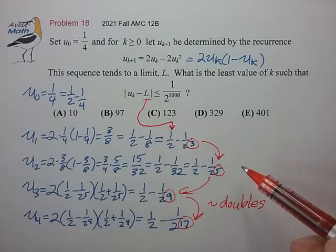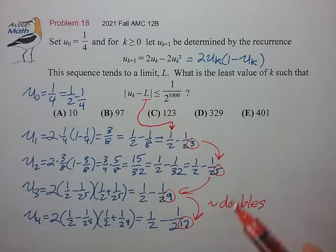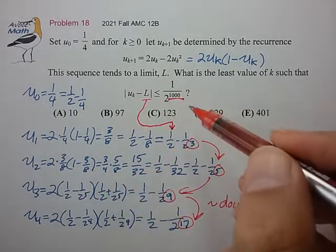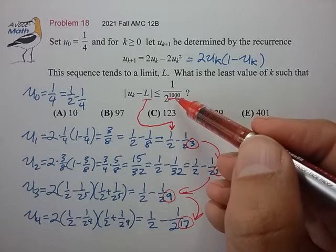So then the question becomes, how many doublings of this exponent does it take to get to 2 to the 1,000? And the answer is it takes about 10 doublings to go from 3 to 1,000, give or take.